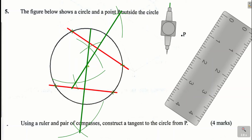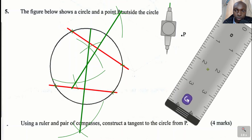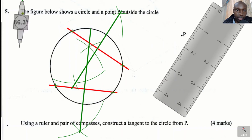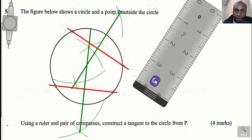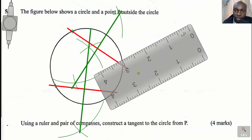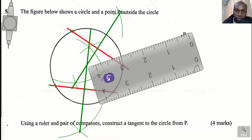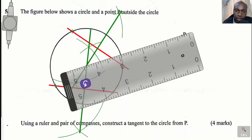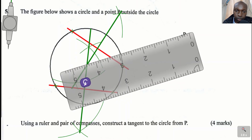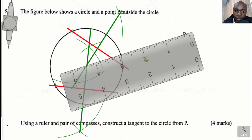The point where the two perpendicular bisectors of the two chords meet is the center of the circle. Having obtained the center of the circle, we are going to join the center of the circle to point P — the point outside the circle. We shall join and make this line a bit longer. That is the center O, and we have that point P.